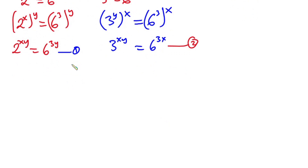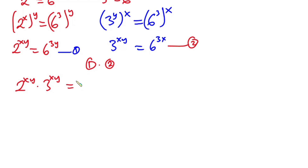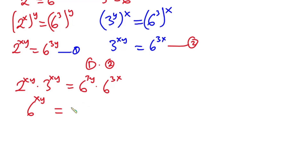Now from here, I will multiply equation 1 by equation 2. So we have 2 to the power xy times 3 to the power xy, which equals 6 to the power 3y times 6 to the power 3x. On the left side, that gives us 6 to the power xy, and on the right side, since the bases are the same, we add the exponents to get 6 to the power 3y plus 3x.